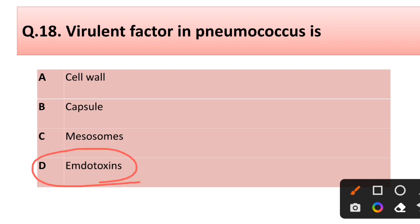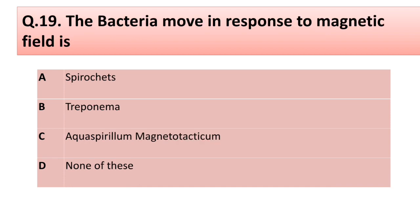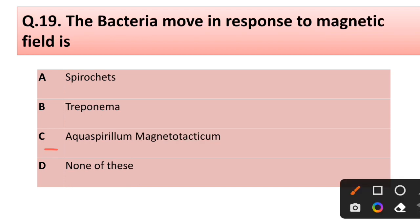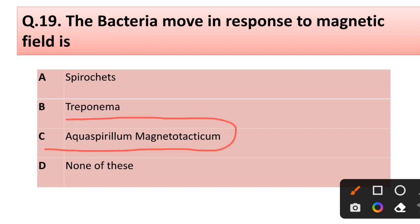Question number nineteen: the bacteria that move in response to a magnetic field — options: (a) Pirochid, (b) Streptomyces, (c) Aquaspirillum magnetotacticum, (d) none of these. Correct answer is option C: Aquaspirillum magnetotacticum.